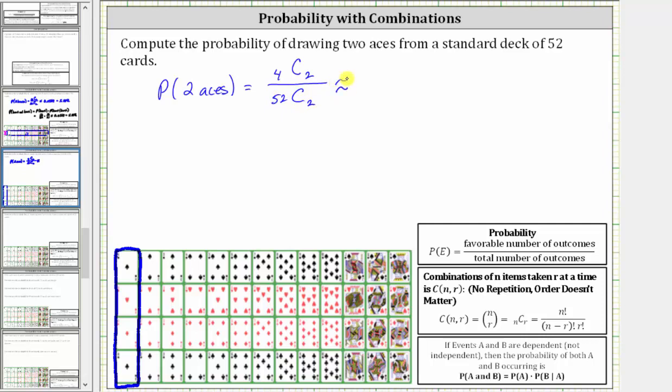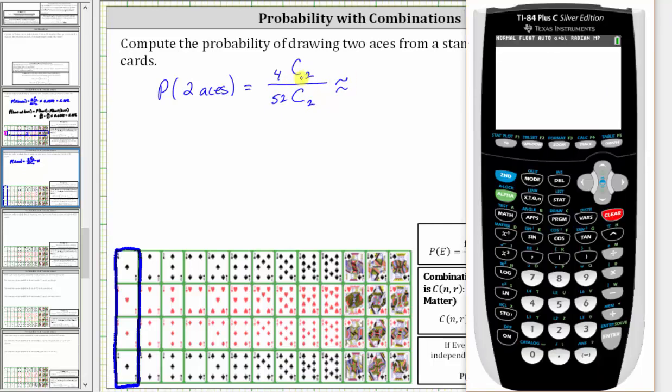Now to determine this probability using the graphing calculator, let's put parentheses around the numerator and denominator. We have open parenthesis, four. Then to select combination, we press math, right arrow to probability, and then press three for the combination.